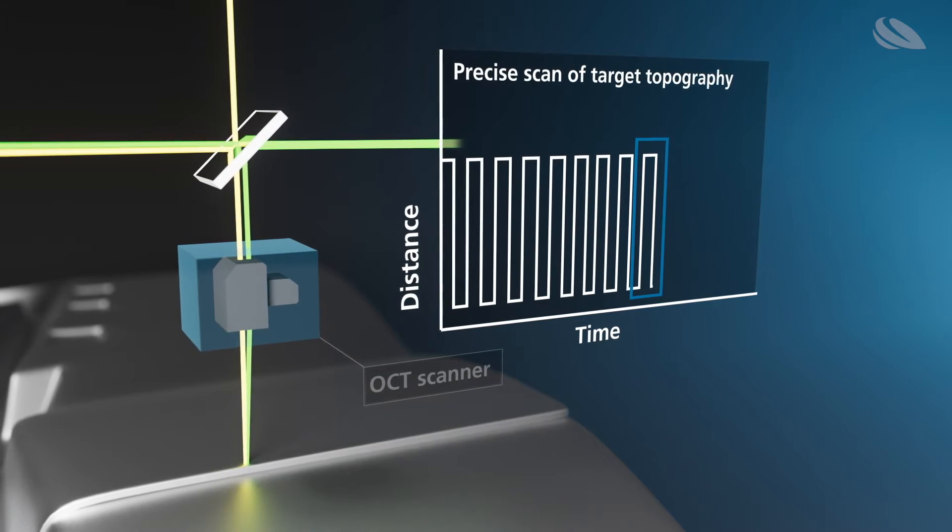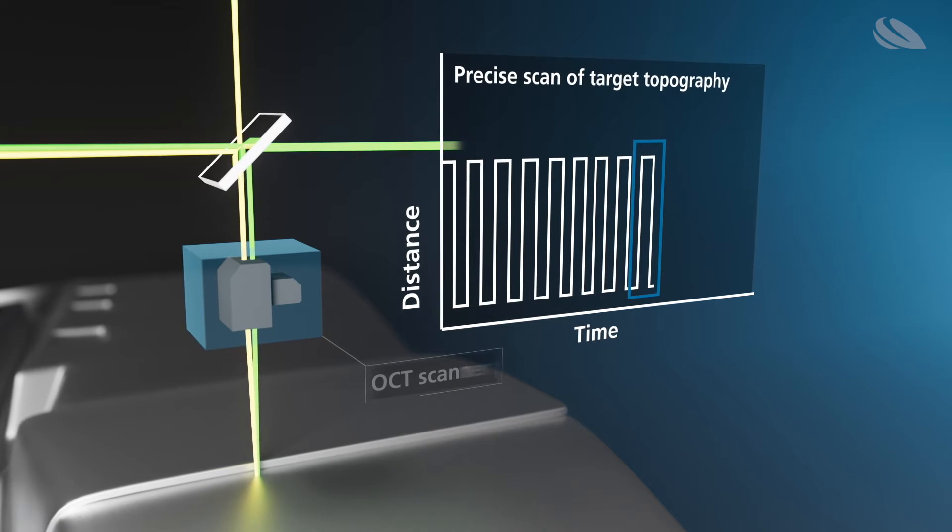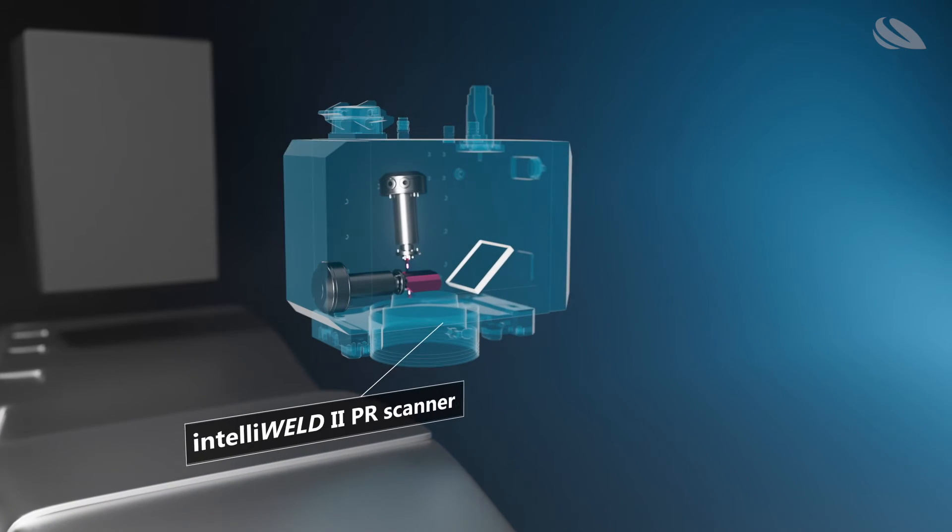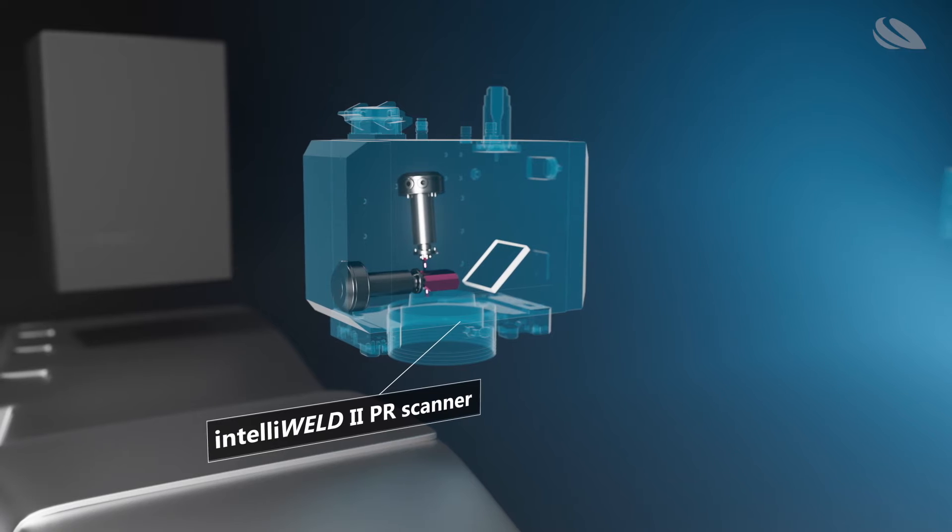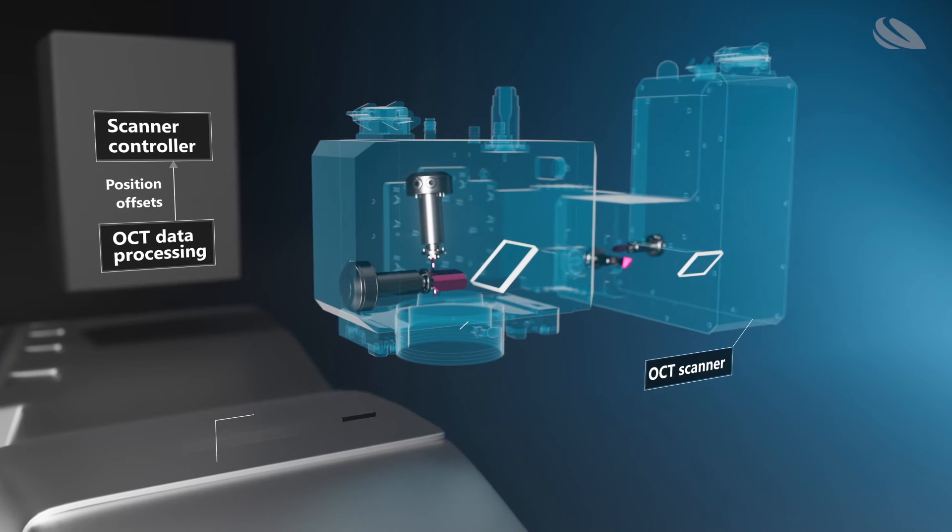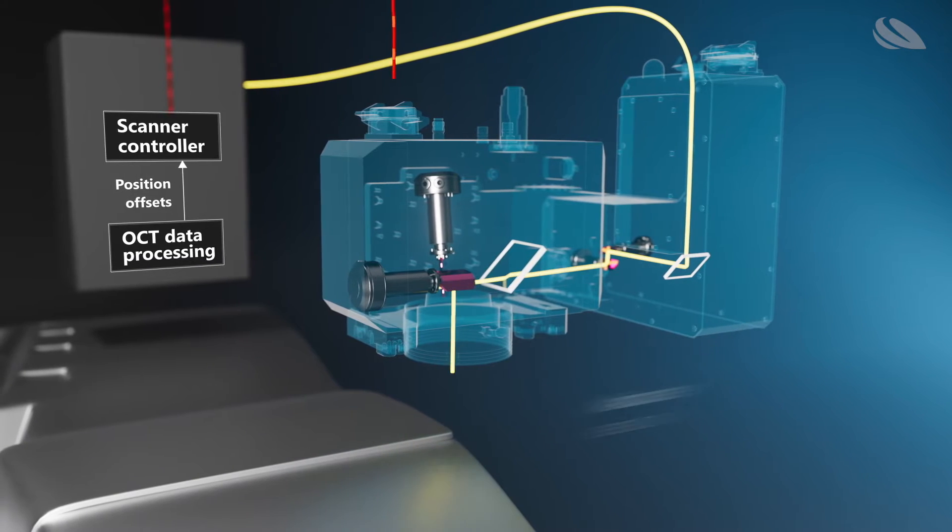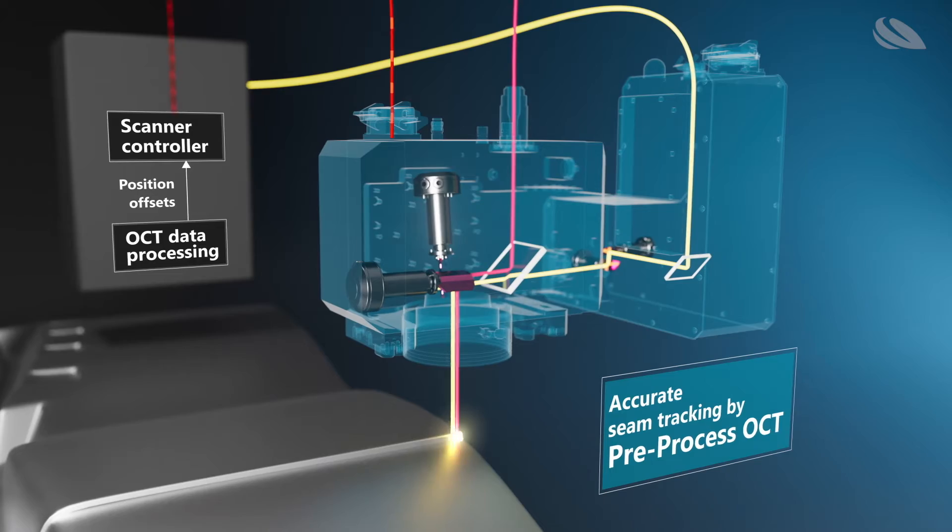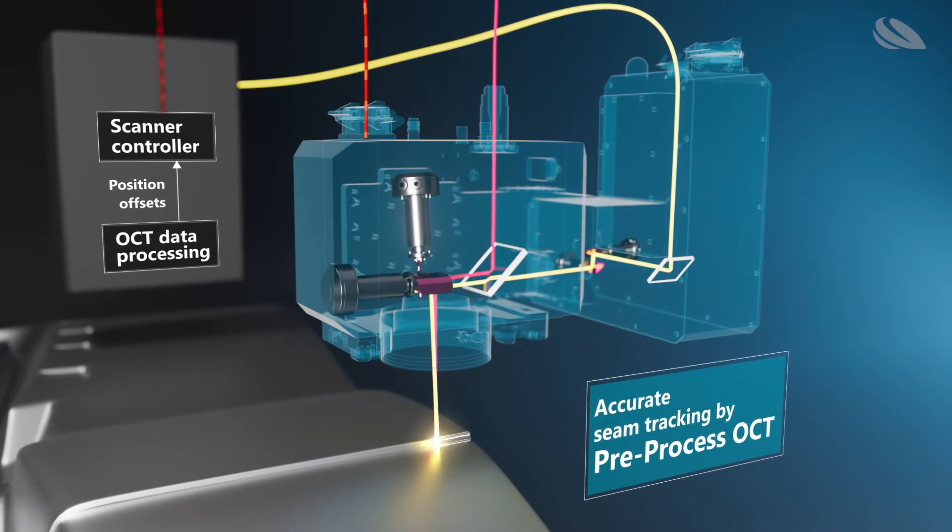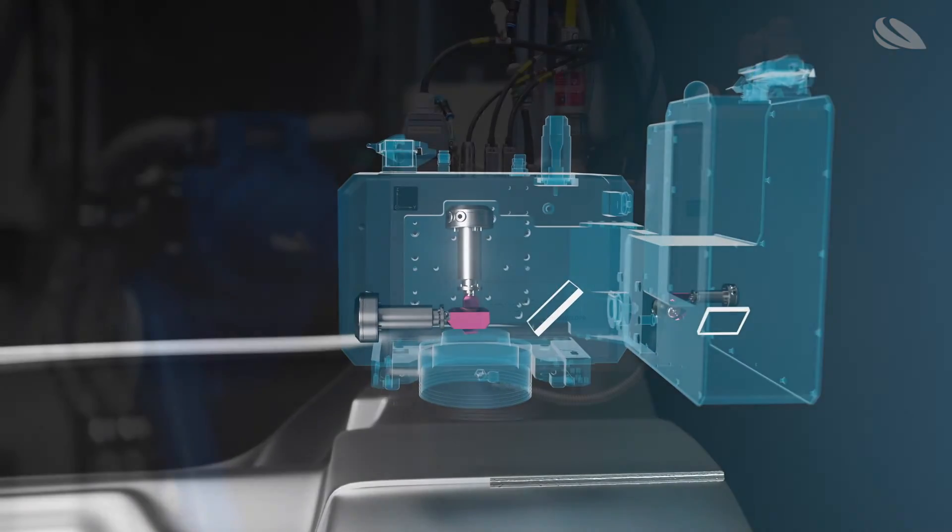For example, when performing a fillet weld, the position of the joint's edge can be accurately located and, in turn, the control signals sent to the Intelli weld scanner are updated so that the laser beam always hits the edge perfectly, resulting in the best possible seam quality.